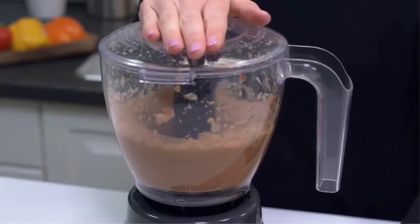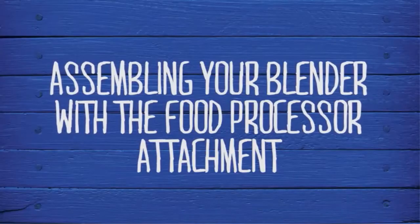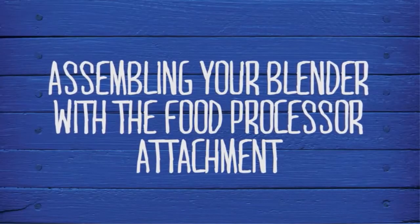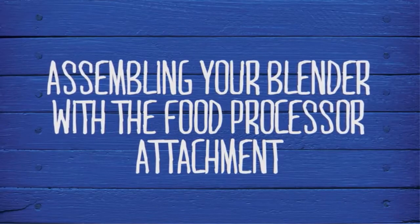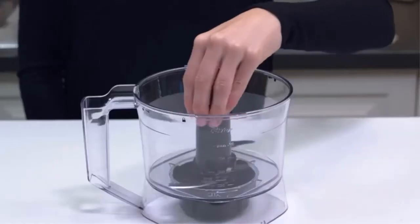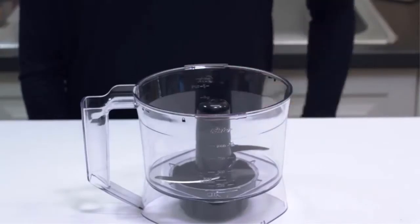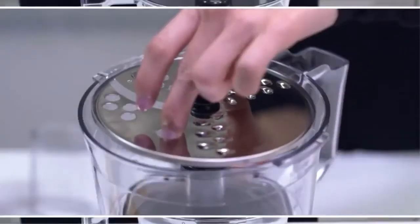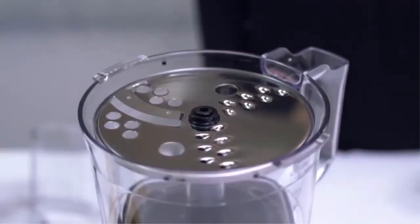The food processor attachment lets you transform your Pro Series blender into a kitchen tool that shreds, slices, and chops. Once you've assembled the adapter onto the bowl, you can choose to chop with the S blade or use the disc for shredding or slicing. To use the S blade for chopping, hold the S blade very carefully by the center hub.